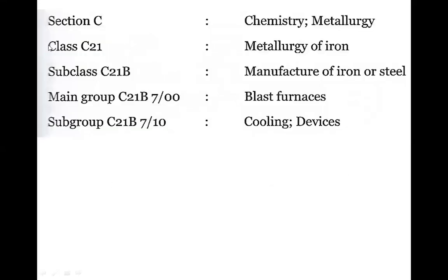The section is C; the class is 21; the subclass is B. So the final classification number combines these: C is the section, 21 is the class, B is the subclass, 7 is the main group, and the decimal subdivision is the subgroup. This is the hierarchy order — the classification order. You need to remember this before searching.